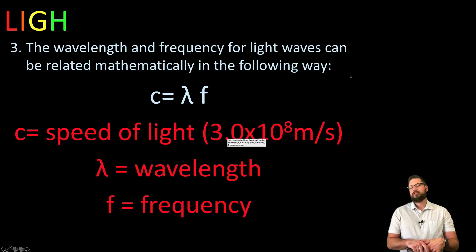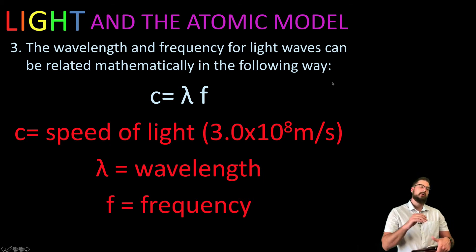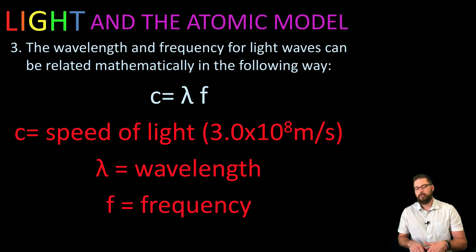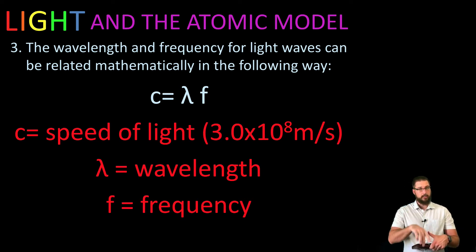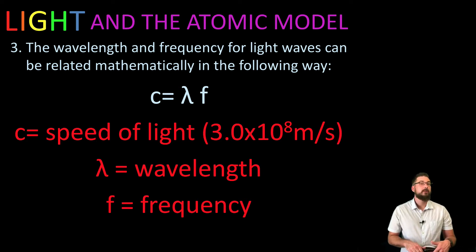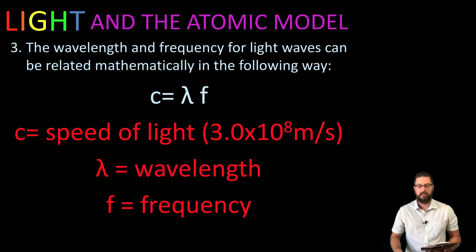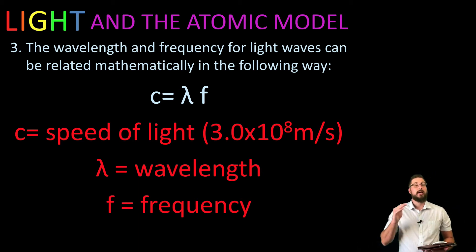We can use the equation c = λf to calculate frequency if we're given wavelength, or wavelength if we're given frequency. Lambda (λ) is the wavelength, and f (sometimes written as v) represents frequency. C is the speed of light, which is a constant — 3 × 10⁸ m/s — and it doesn't change. Note: constants do not influence significant figures.